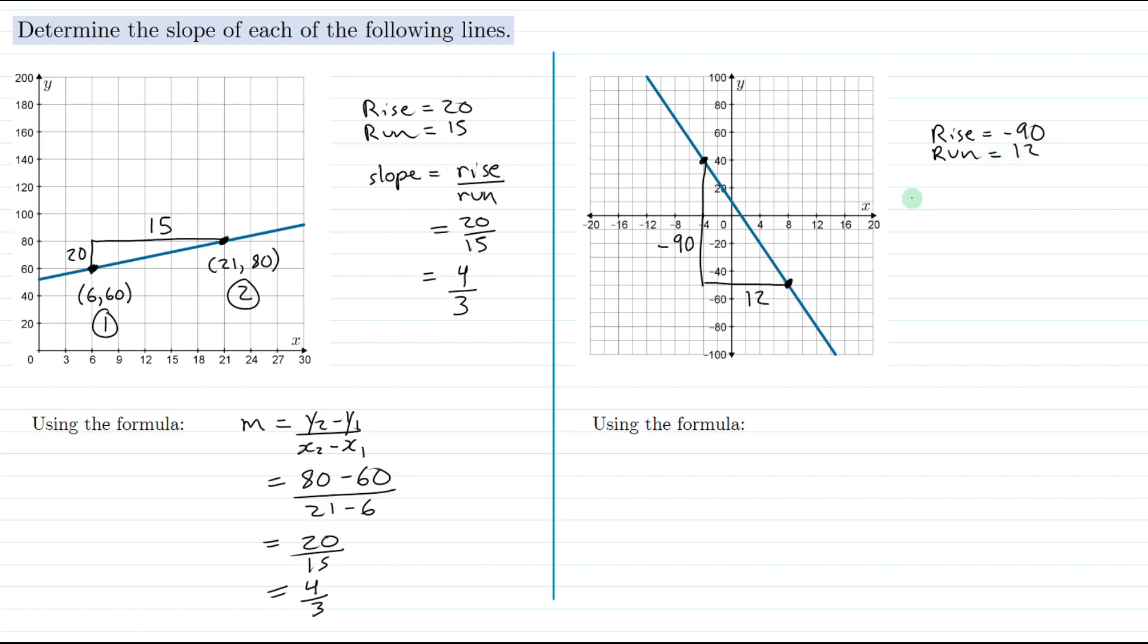So our slope, which again is rise over run, is negative 90 over 12. We can reduce this fraction - both 90 and 12 are divisible by 6. 90 divided by 6 is 15 and 12 divided by 6 is 2. Furthermore, we had a negative divided by a positive which works out to a negative result. And that's what we were expecting - the slope was a negative result.